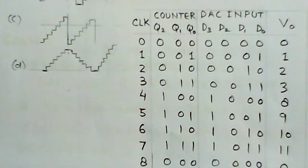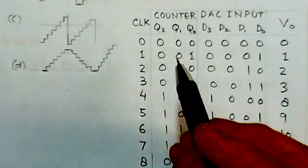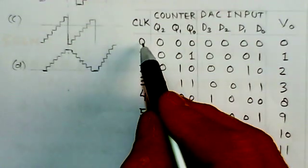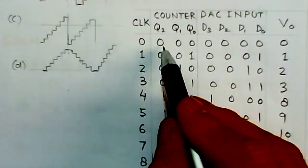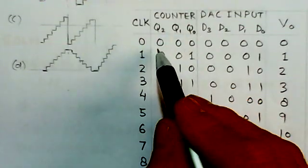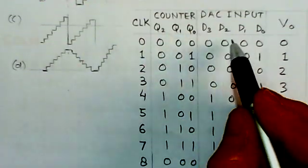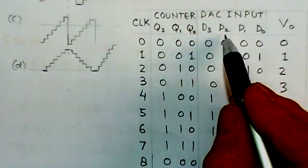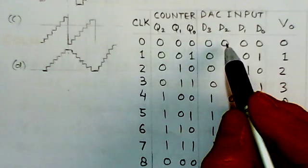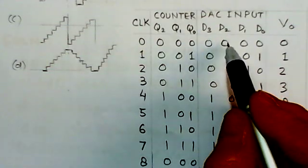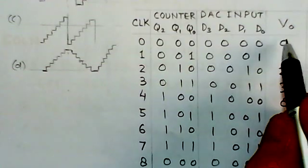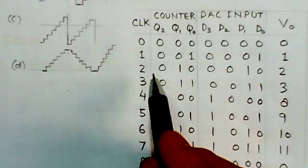When there is zero clock pulse, the counter output will be zero. Q2, Q1, Q0, they are all zero. DAC input also would be zero. D2 input, this D2 is connected to ground, this will always be zero throughout. What is the corresponding output V0 we can find from here.